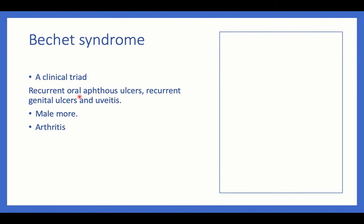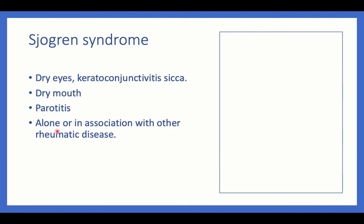Another rheumatological condition is Behçet syndrome — a clinical triad of recurrent oral ulcers, genital ulcers, plus uveitis. These oral and genital ulcers occur on a recurrent basis, along with uveitis. It is more common in males and can also have joint disease.